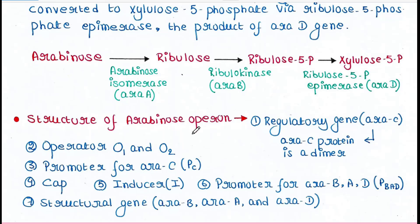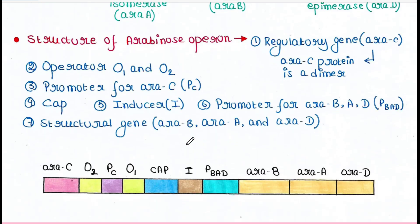Now let's talk about the structure of the Arabinose operon. It has a regulatory gene, Ara C. The Ara C product is a dimer — the Ara C protein is a dimer, please keep that in mind. There are two operators: operator O1 and operator O2. There is a promoter for Ara C, noted as PC, then a CAP binding site, then an inducer site, then a promoter for the three structural genes BAD, and finally the structural genes Ara B, Ara A, and Ara D.